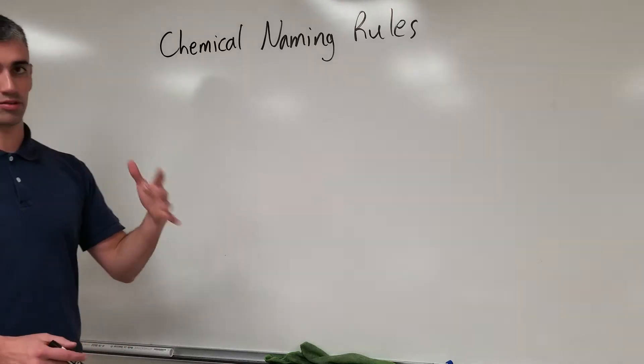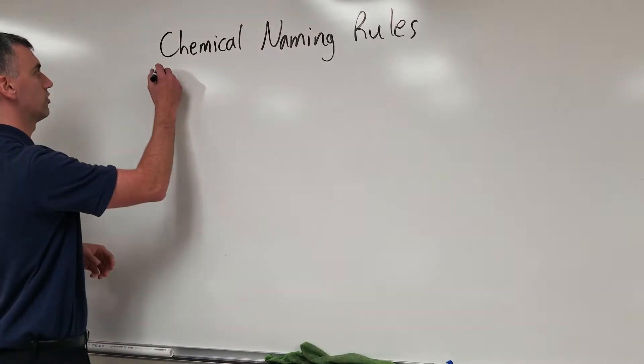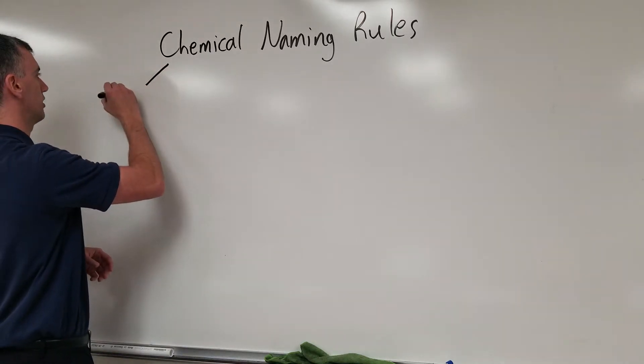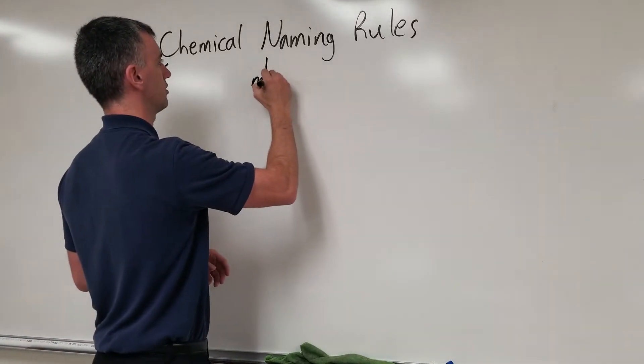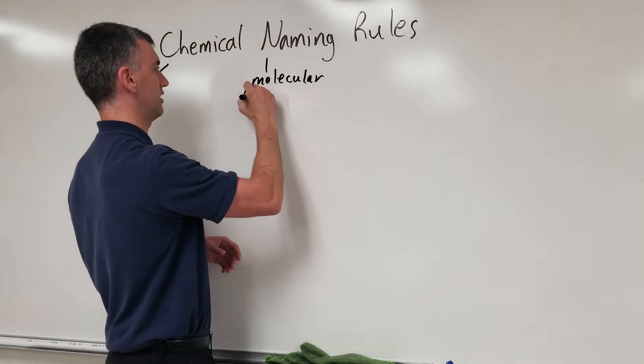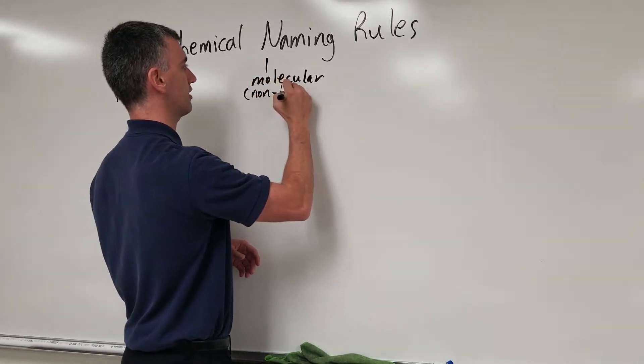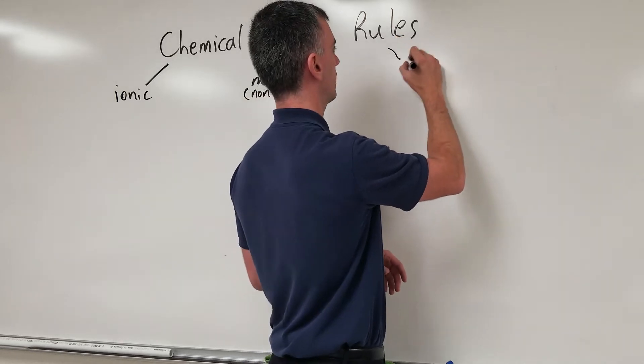When looking at the chemicals you're going to come across in this class, essentially they fall into three categories. These chemicals are either ionic, molecular, molecular also being called non-ionic, and the third type you're going to come across is acids.